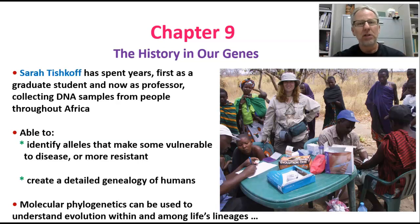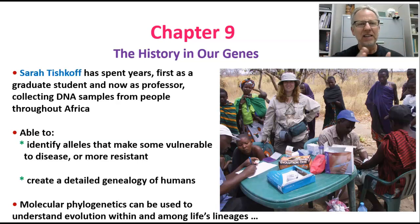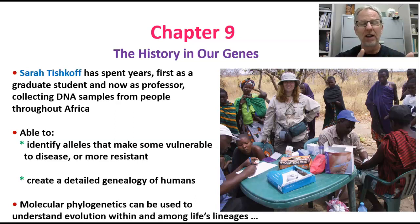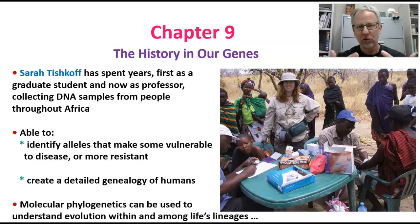The chapter opens with this story about Sarah Tishkoff, who has spent many years, first as a graduate student, now as a professor, collecting DNA samples from people throughout Africa. At this point, she's collected thousands of samples. By looking at the DNA of many thousands of individuals, she's able to identify alleles that make some individuals more vulnerable to diseases, and she's able to create a detailed genealogy of humans, looking at the history of our own species.